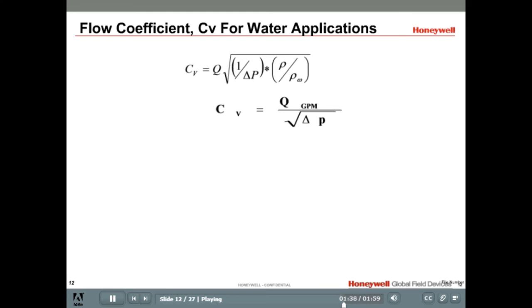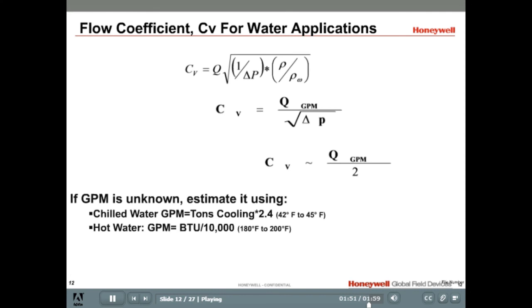If the pressure drop is unknown, you can use some rules of thumb. 3 to 5 psi is often assumed for small to medium sized coils. To make the math easy, you may use 4 psi as the pressure drop, and estimate the CV by taking the flow rate in GPM and dividing it by 2.